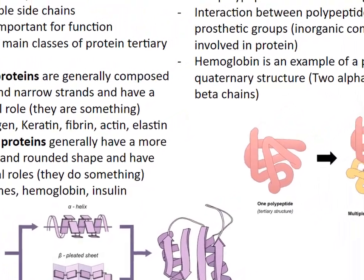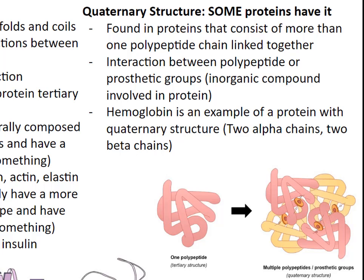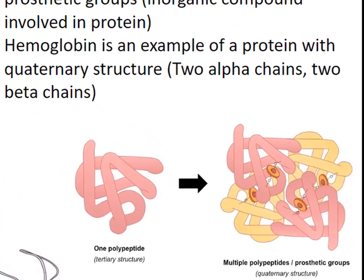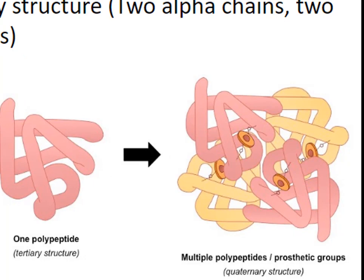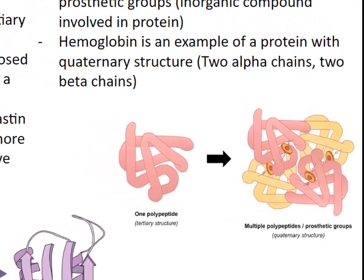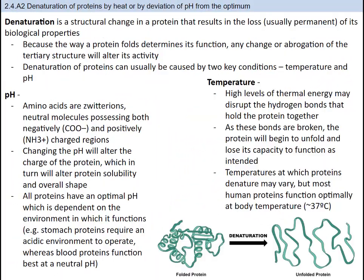The last level of protein structure is quaternary structure. Not all proteins have this quaternary level. This type of structure is found in proteins that consist of more than one polypeptide chain linked together. The interactions between polypeptide and prosthetic groups, which are inorganic compounds involved in the protein, determines the specific quaternary structure. Hemoglobin is an example of a protein with quaternary structure, with two alpha chains and two beta chains. The interactions between these alpha and beta chains causes it to form its unique shape.